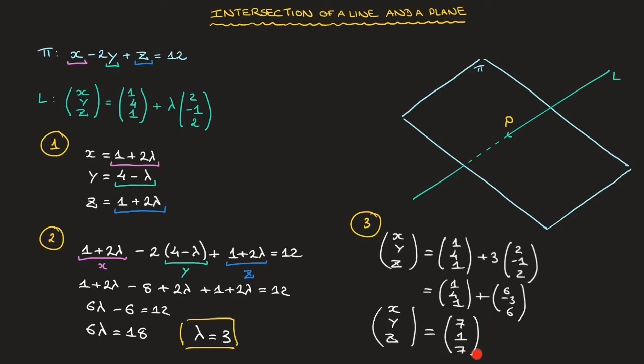We now have the position vector of the point of intersection of the line and the plane. In fact, we could state the final answer as P has coordinates 7, 1, 7. And there we have it. That's how we can find the point of intersection of a line and a plane. And that's it for this tutorial.